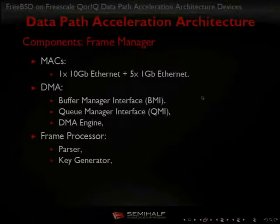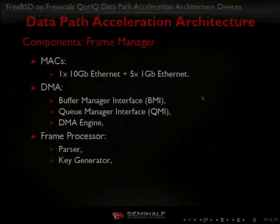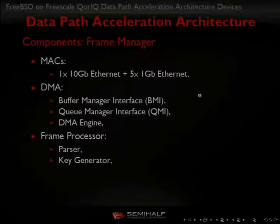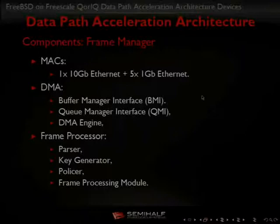The key generator makes decisions about where a packet should be routed in the system, based on parser results. For example, we can extract the VLAN field and use it to choose a queue, which means choosing the target device where the packet should be processed. We can also police traffic, and if that is not enough, we can run a frame processing microcode, which is a small CPU inside.